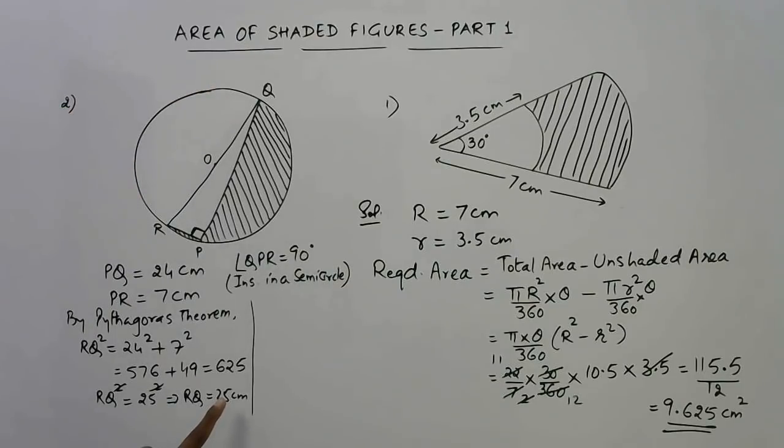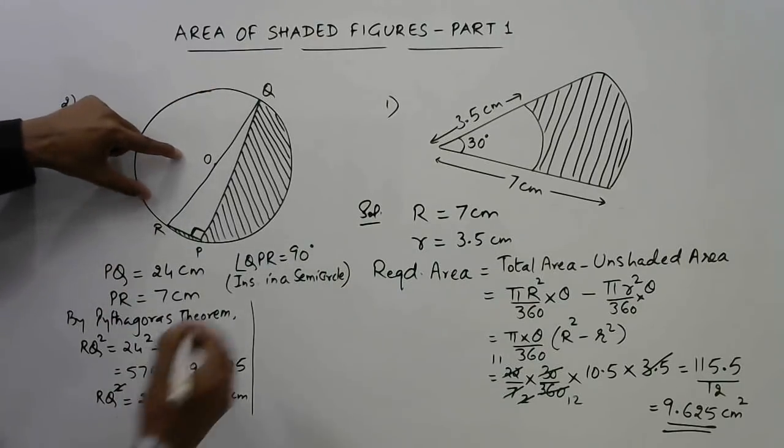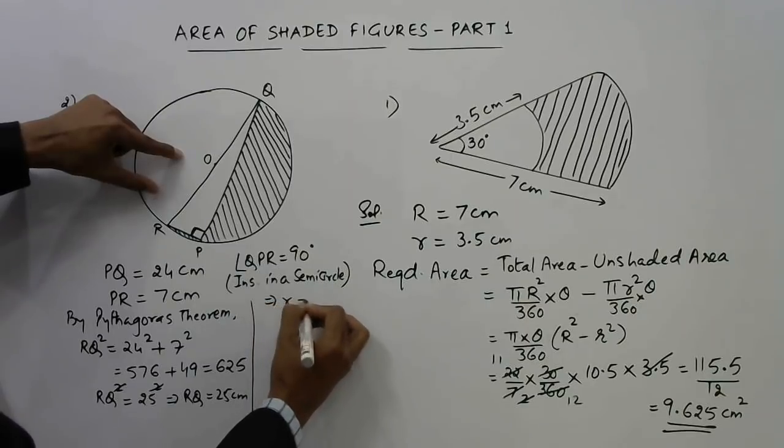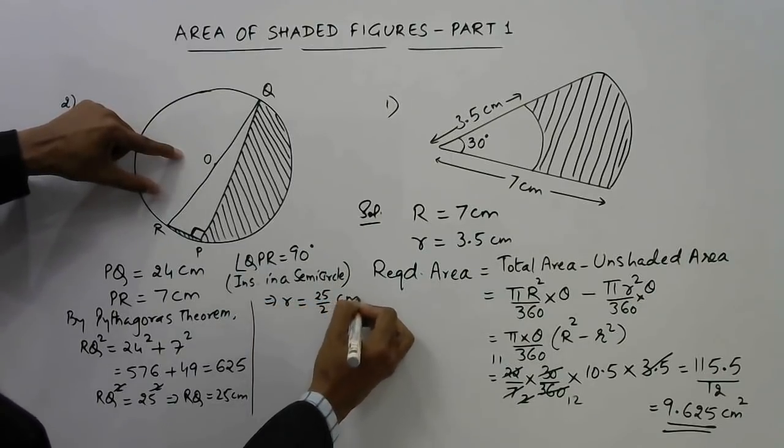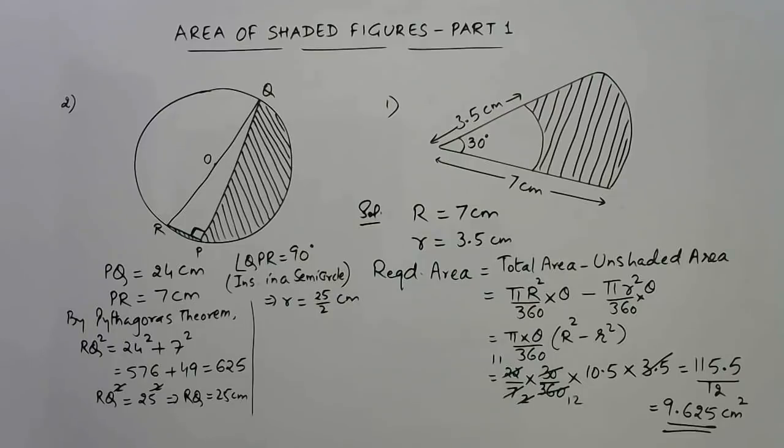This is the first part of this question - you need to find the diameter first. The diameter comes out to be 25 cm and half of that gives you the radius, that is 25/2 cm. I am not converting it to decimal form so that my calculation becomes a little bit easier.